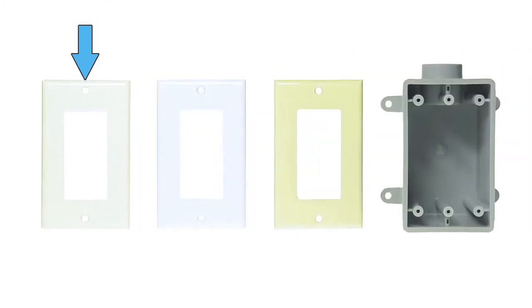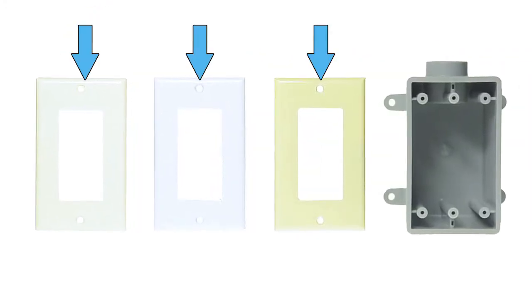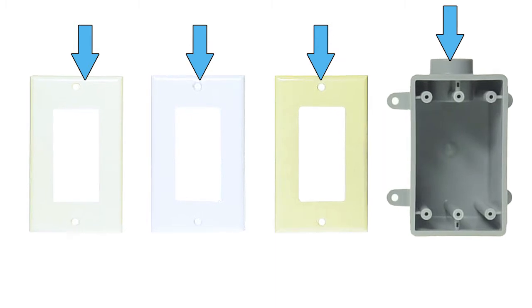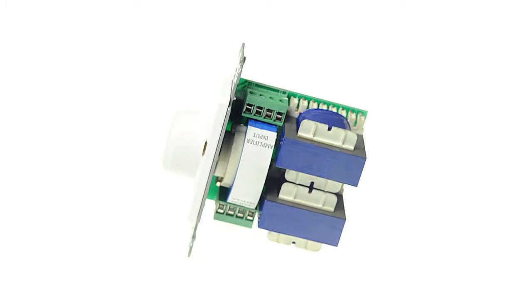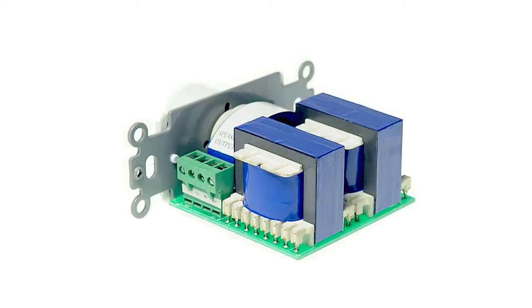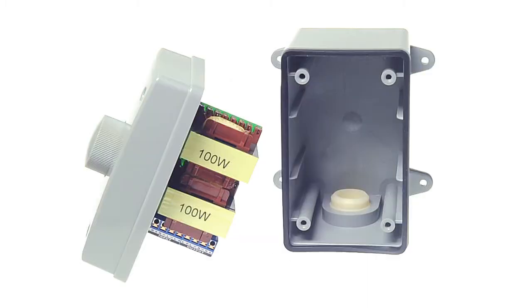These volume controls come in almond, ivory, white, and outdoor to match any decor. Impedance-matching volume controls ensure that the impedance load shown to the receiver or amplifier never goes below the rated capabilities.